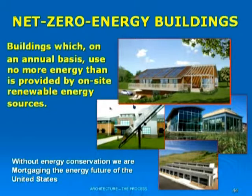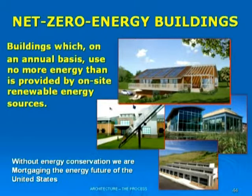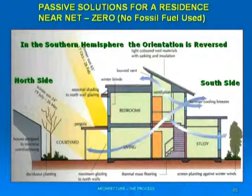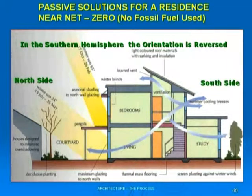We need to do some energy conservation in this country big time, because we are mortgaging the future of our children's and grandchildren's livelihood. I'm not talking about recycled materials or different paint or carpeting — I'm talking about energy conservation as the first and most important step. This is a typical arrangement of how natural ventilation works: by opening high windows and low windows, rising hot air goes out and cooler air comes in, summer sun is blocked, and the winter sun comes through.